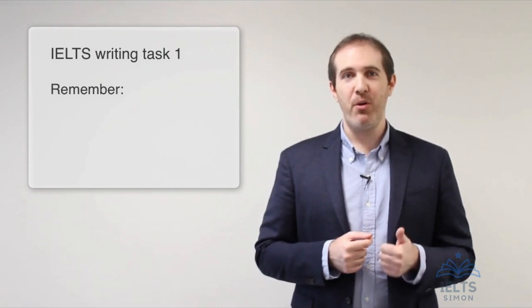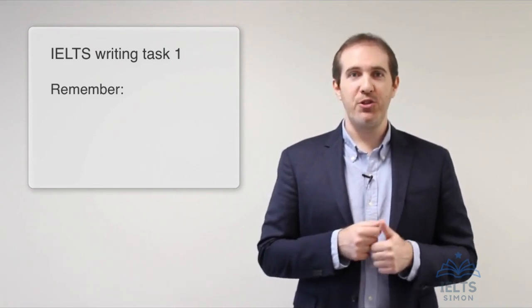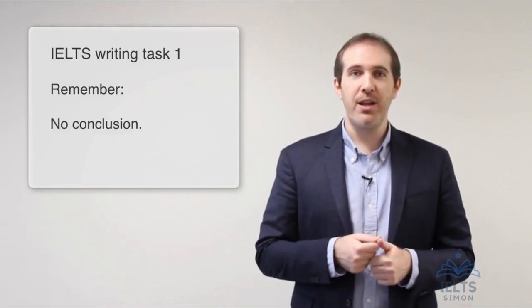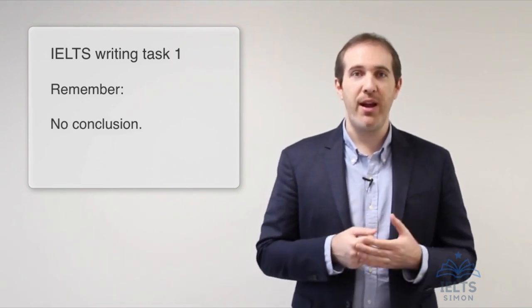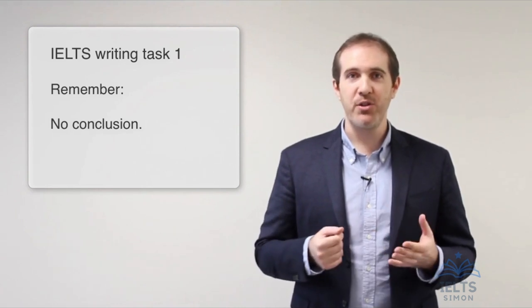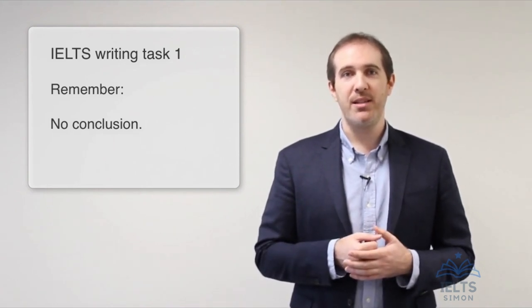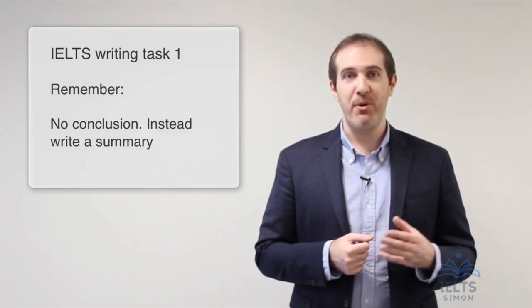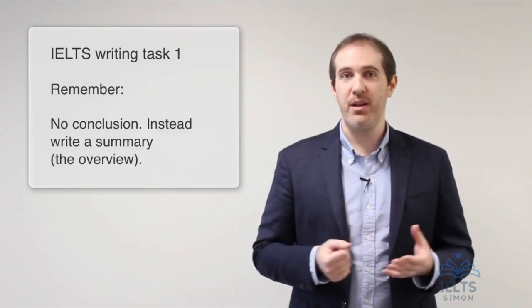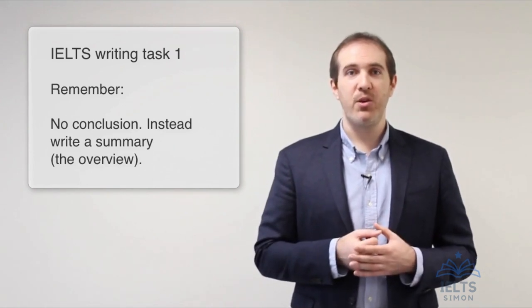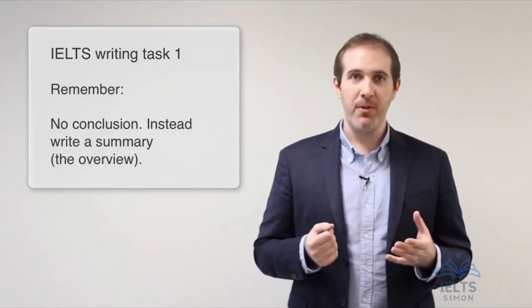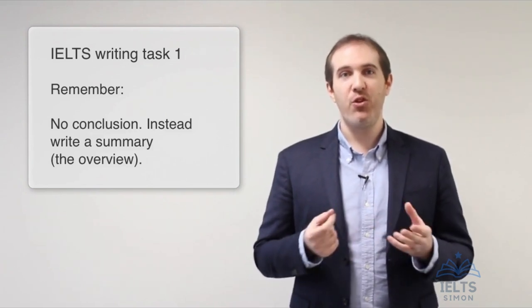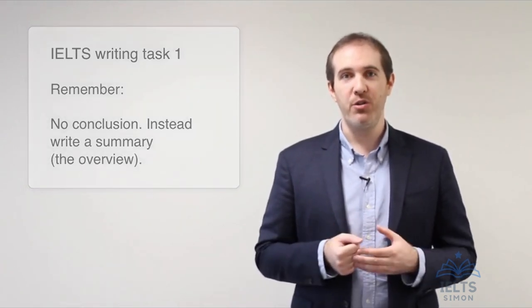And another important thing before we get going, I'll just say this now, no conclusion. Because a conclusion is like a final opinion, a final judgement. So we're never going to put a conclusion in writing task 1. You can put a summary in writing task 1. Examiners call this the overview, but it's the same as a summary. So if you want to put something general at the end of your essay in writing task 1, let's call it a summary and not a conclusion.